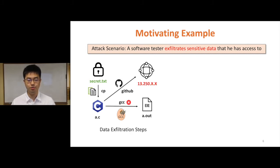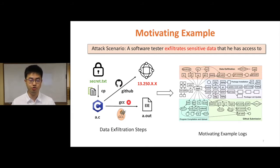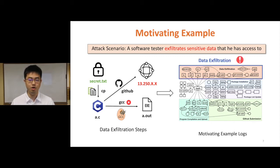He then uploads the source code to a GitHub repo under his control. This attacker also performs benign behaviors in parallel to the attacks. This motivating example will generate over 400,000 events, and it's very hard for an analyst to find interesting behaviors like data exfiltration. Behavior abstraction helps by partitioning events into behaviors and clustering similar ones. Analysts can stay focused on representative behaviors — for example, data exfiltration behavior will be separated from other behaviors, and multiple similar program compiling and upload behaviors will be clustered.